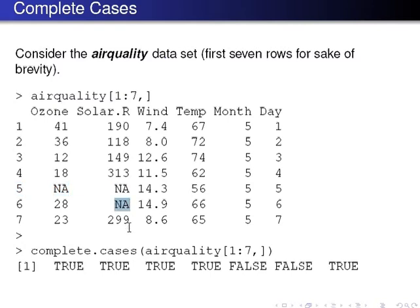So those cases are not complete cases. Rows one to four have values for each of the variables, and row seven also has values for each of the variables.